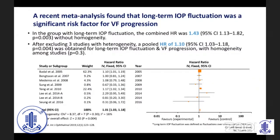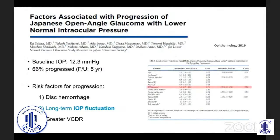A recent meta-analysis also showed that long-term IOP fluctuation is a significant risk factor for visual field progression — not just the AGIS study, but multiple papers and studies. The combined hazard ratio was 1.43, clearly showing long-term IOP fluctuation is a significant risk factor. A Japanese study in normal pressure glaucoma also showed that risk factors for progression included disc hemorrhage, long-term IOP fluctuation, and a large cup-disc ratio.